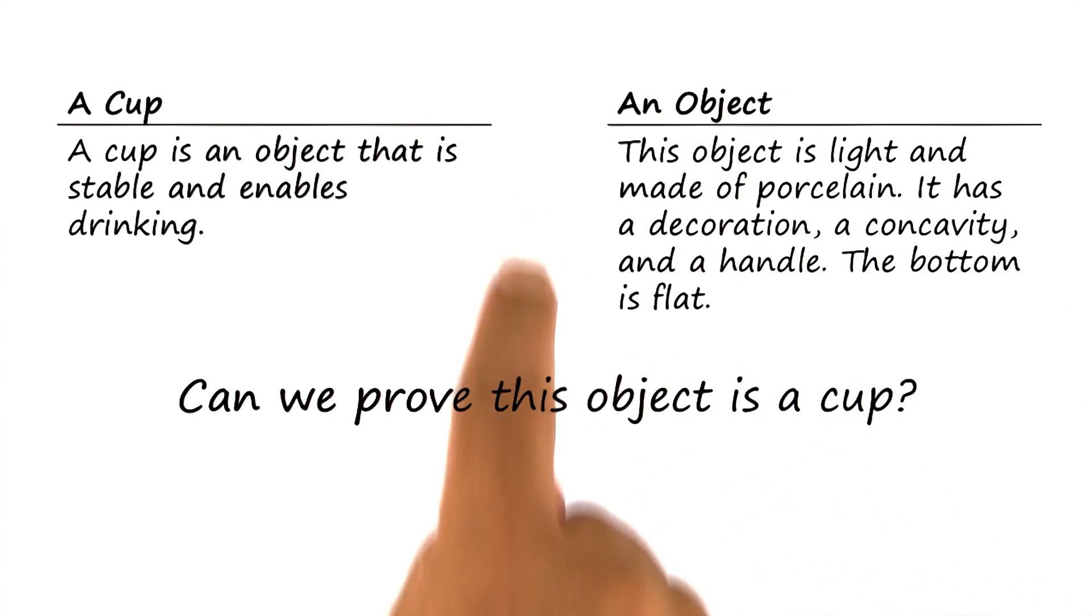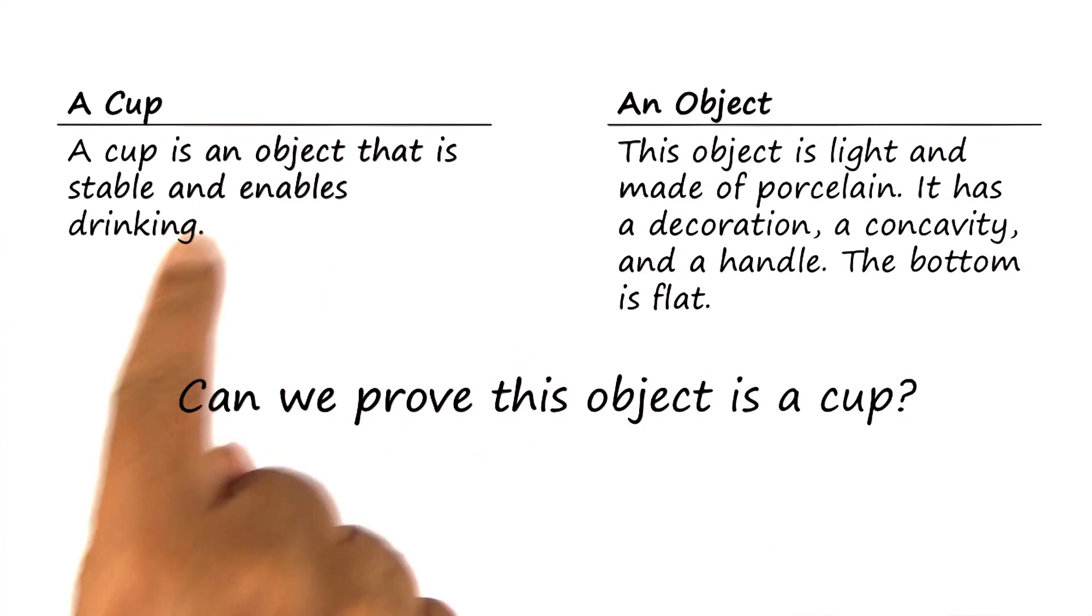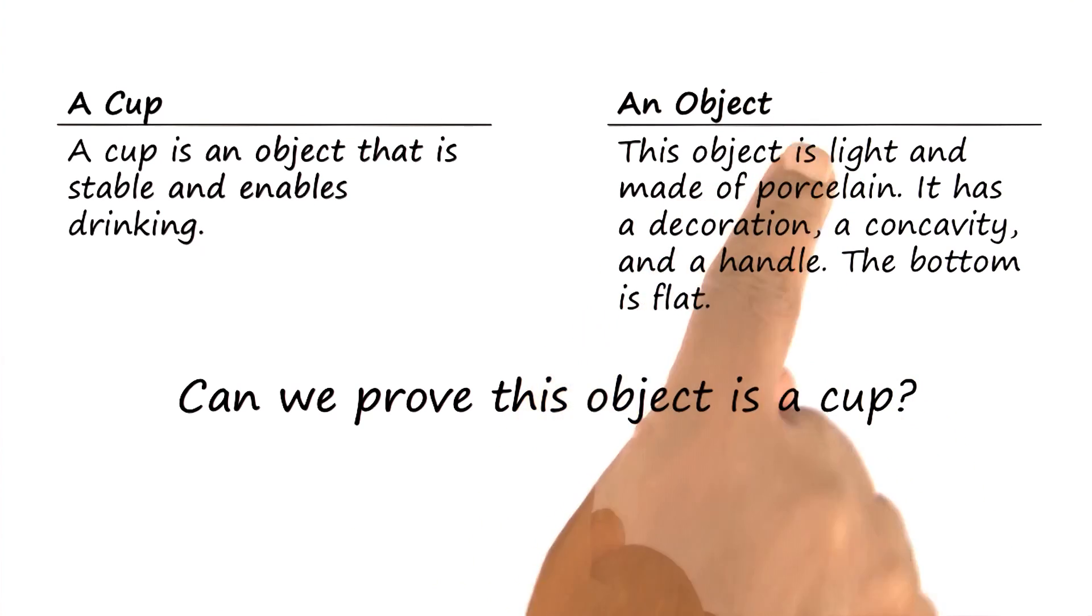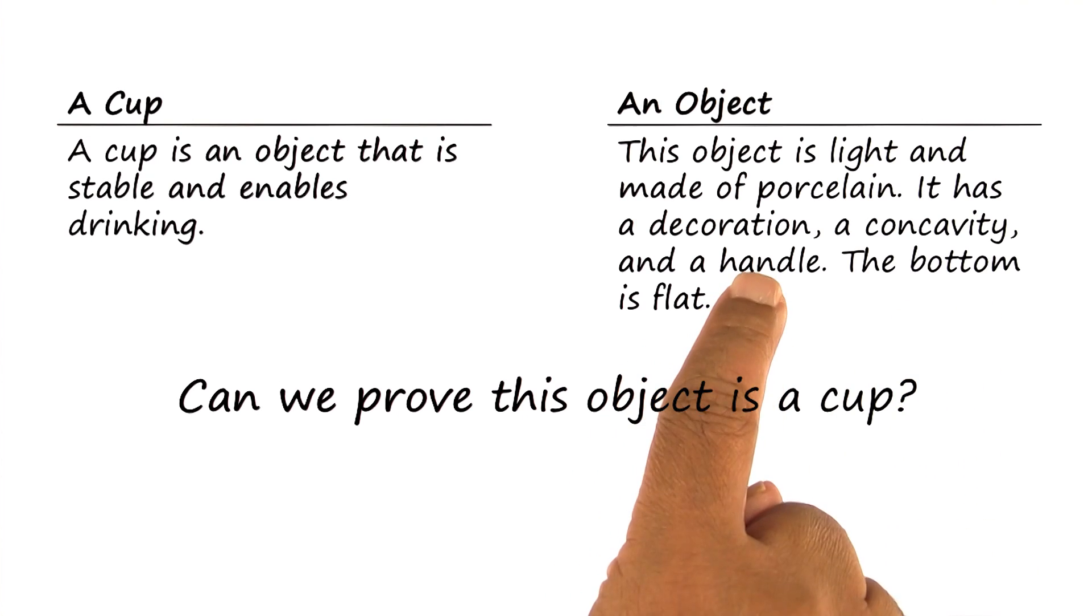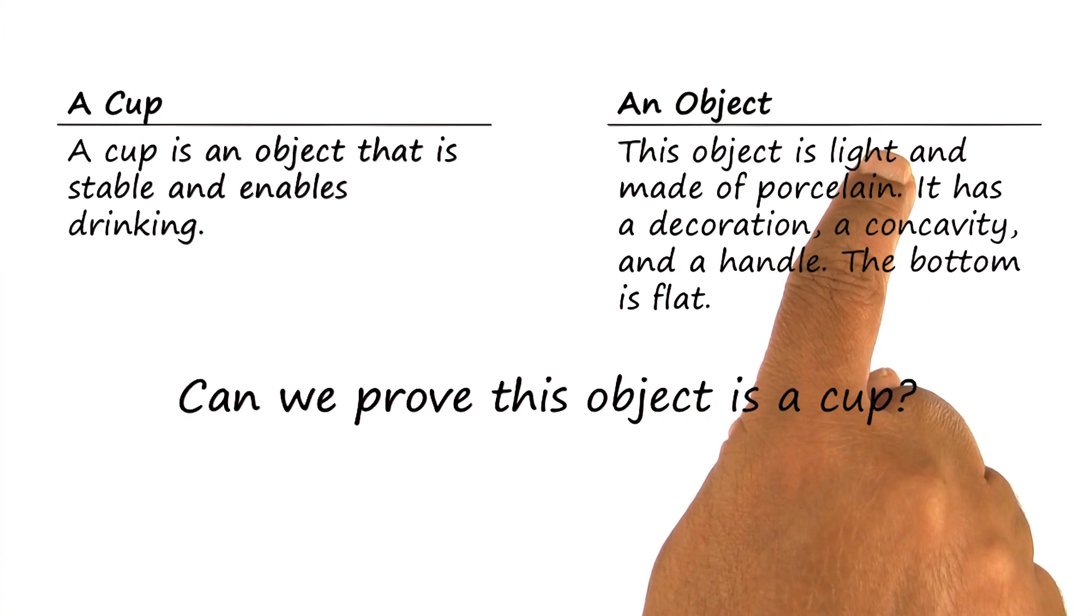Now the robot decides to use this object as a cup because it can prove to itself that this object is an instance of a cup. It does so by constructing an explanation based on the fact that the bottom is flat, it has a handle, the object is concave, and it is light.